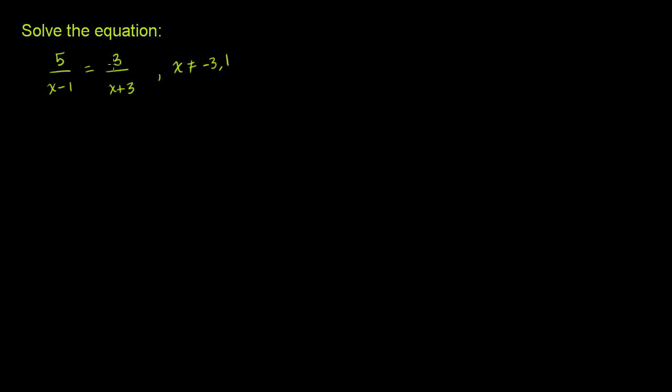That's because if x was negative 3, this expression right here, you'd be dividing by 0, would be undefined. If x was 1, this expression right here would be dividing by 0, and it would be undefined.